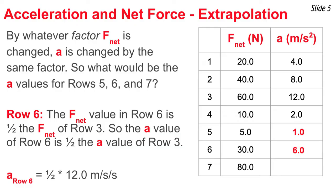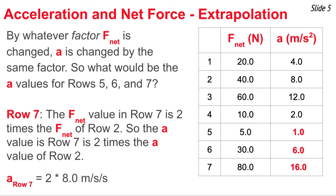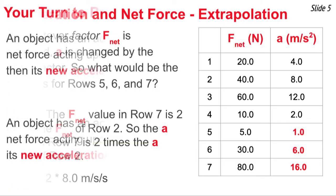Finally, looking at row 7, the F_net there is 2 times the F_net of row 2. So to find the acceleration of row 7, we take the row 2 acceleration and multiply it by 2, giving us 16 meters per second squared. You can see how we use this principle: by whatever factor the F_net is changed, the acceleration is changed by the same factor.